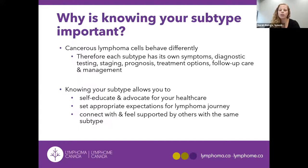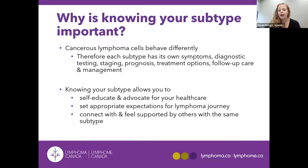The most important take-home message of this talk is that cancerous cells of the lymphatic system behave differently, which is why there are so many different subtypes — they have different ways of presenting in the body, different symptoms, different tests for diagnosis, different ways of how the cancer can be advanced, and different predicted outcomes. Ultimately, your subtype determines what treatment options are available to you, the follow-up care that you receive, and your overall long-term management when you are diagnosed with lymphoma.